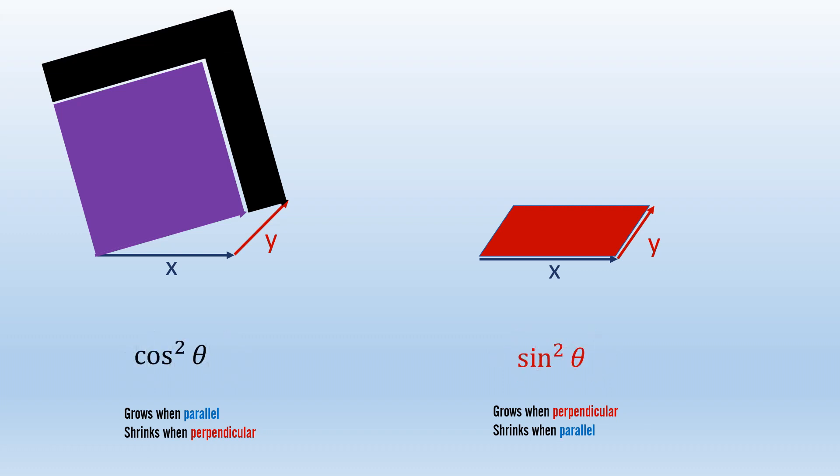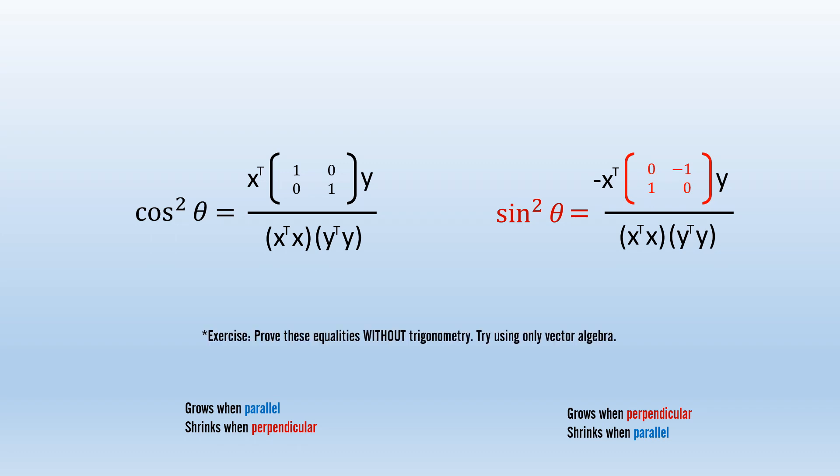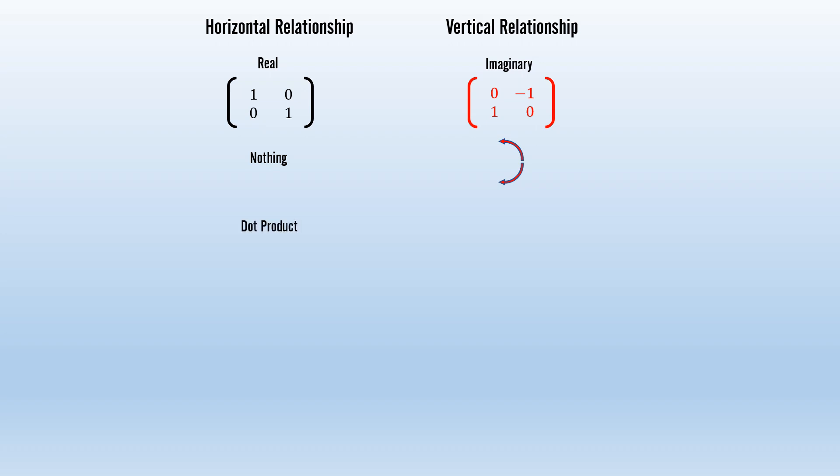We now have this system where we can get values that trade off with one another as we adjust an angle. I hope this reminds you of the way trigonometry behaves. In fact, the dot product is proportional to cosine, and the determinant is proportional to sine. In summary, we have several different ways of describing the horizontal relationship and vertical relationship between two vectors. We have the identity matrix which acts as a real part, and the rotation matrix that acts as an imaginary part. Their quadratic forms are the dot product and the determinant, which are proportional to cosine and sine. One grows when the vectors are parallel, the other grows as they become perpendicular.